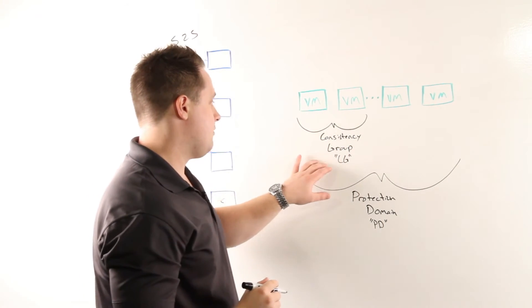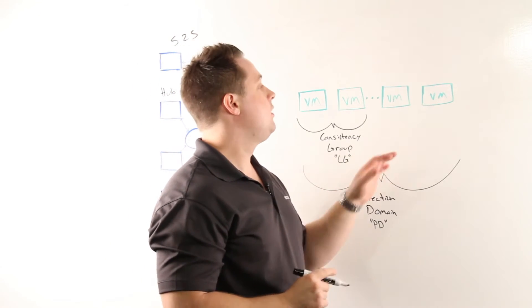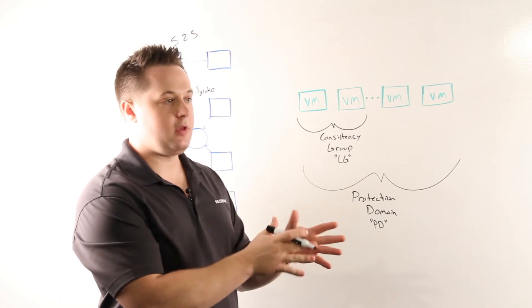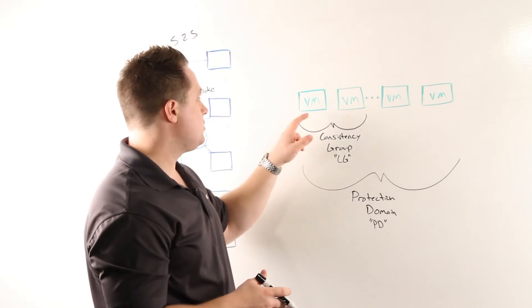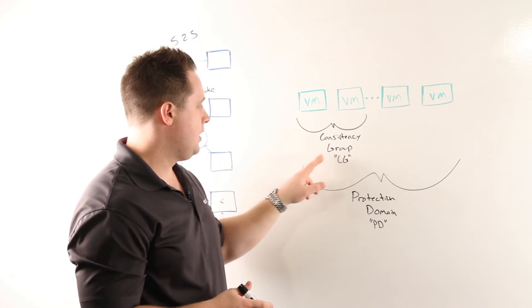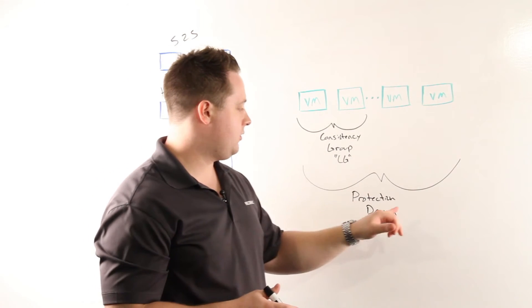Within a protection domain, you can have multiple consistency groups. Most commonly, if you have a certain application or service, you'll have all the virtual machines that make up that application in a consistency group. Then you can have multiple of those within a single protection domain.